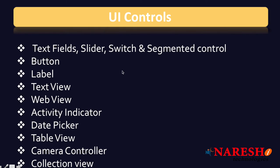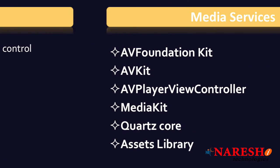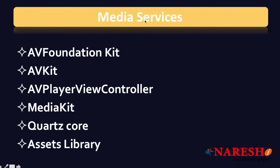UIKit provides many UI controls including text fields, sliders, switches, segment controllers, buttons, labels, web views, activity indicators, date pickers, table views, collection views, camera controls, and many more — all of which will be introduced in app development.